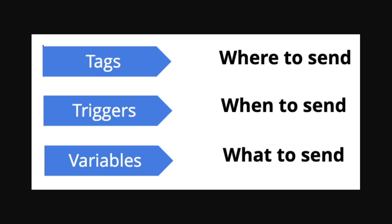The trigger dictates when to send the information — do we want to send it based on a button click, a page load, a product purchase, a form download? Whatever that trigger is to fire that tag, you set it up in your triggers component. Then finally, variables tell us what to send — any custom piece of information, any specific link click, specific product page. Google Tag Manager already has pre-existing variables you can choose from, and you can even create custom variables.